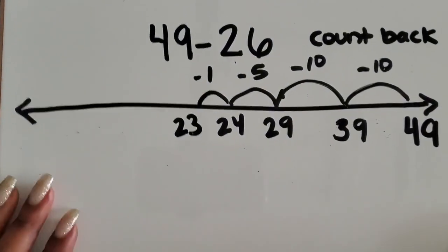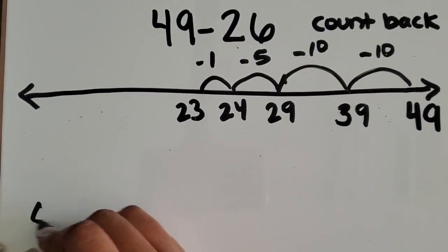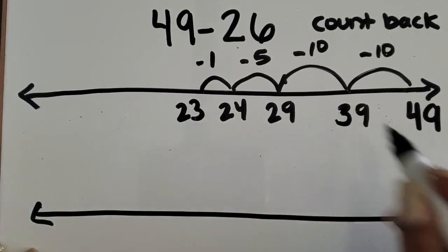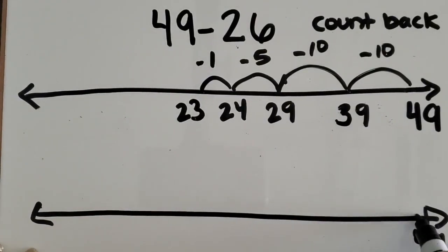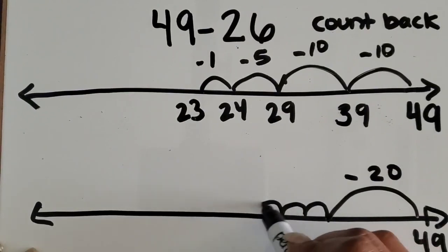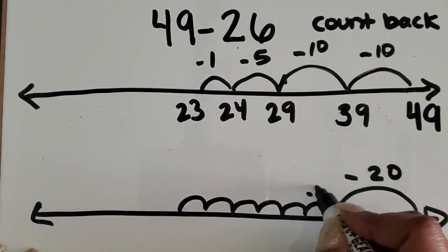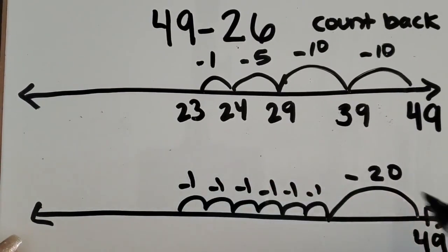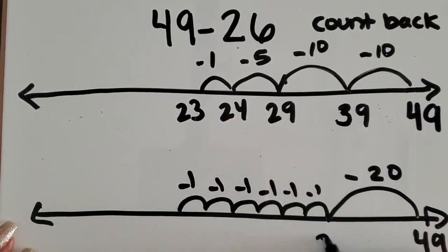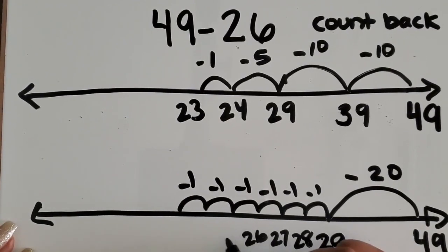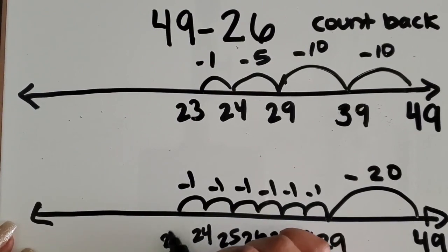Another way we can count back, we draw that number line again. We start with 49. I can count back by 20 this time and then count by 1. 1, 2, 3... 25, 24, 23.